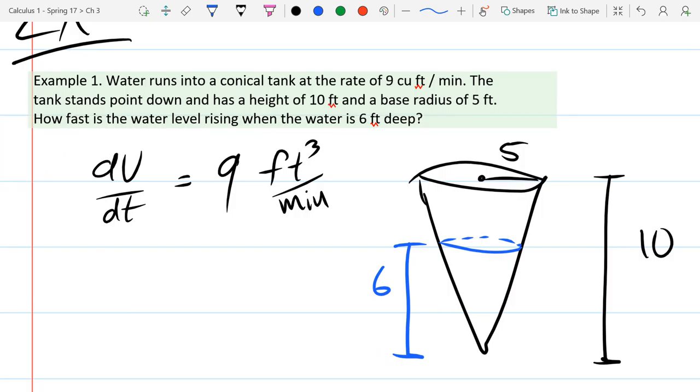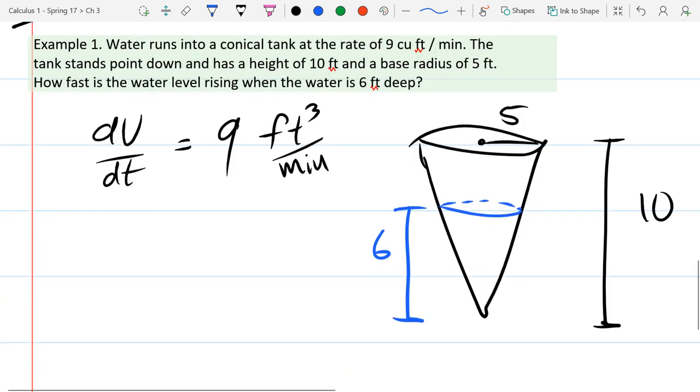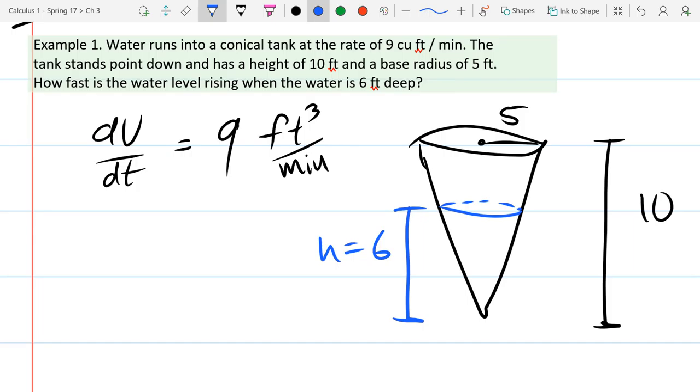So I'm going to draw the water level in the tank, and that water level is 6. So I didn't write units here, but all these are feet. What is actually changing with these three measurements? The water height, the tank height, and the tank radius. Which one of these measurements is changing? The water height. So the 5 and the 10 are constant.